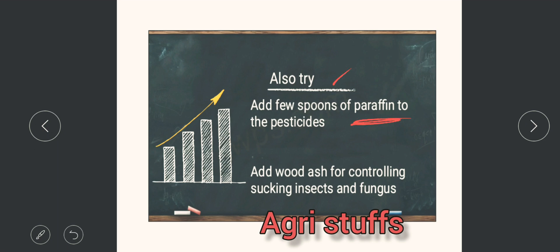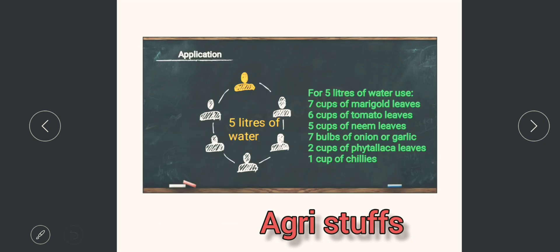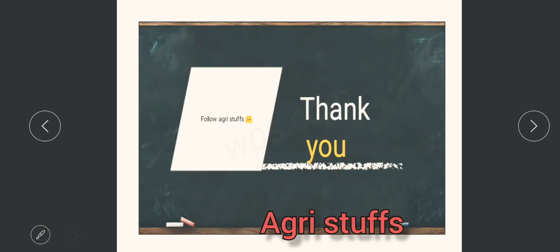For application, for five liters of water you need seven cups of marigold leaves, six cups of tomato leaves, five cups of neem leaves, and seven bulbs of onion or garlic. Then thank you for listening to my words and this concept.